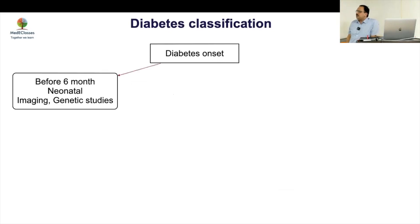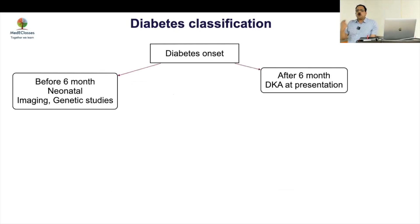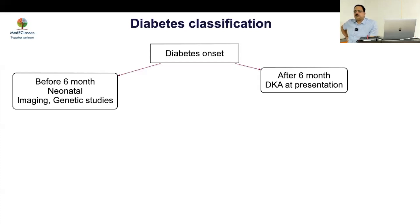These six cases cover the entire range of non-type 1 pediatric and adolescent diabetes. How do you classify diabetes? If onset is less than six months, think of neonatal diabetes — do imaging and then genetic studies. If imaging is not clear and you want to know whether the pancreas is formed, fecal elastase is the best marker, because even on CT the pancreas is sometimes not very clearly visible.